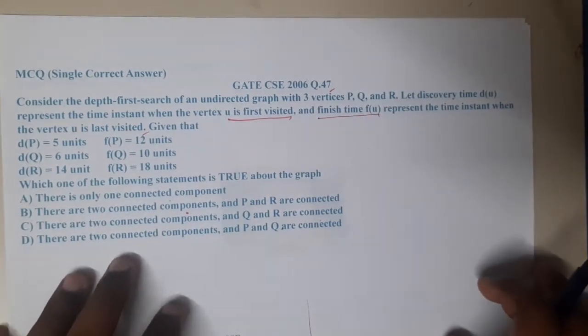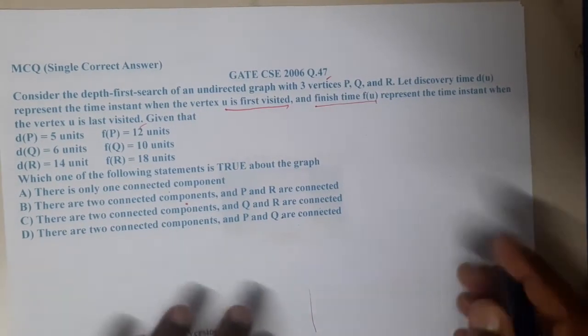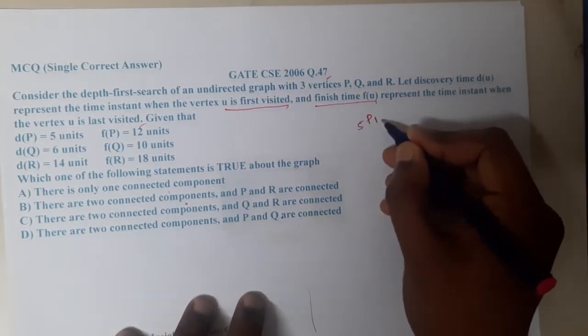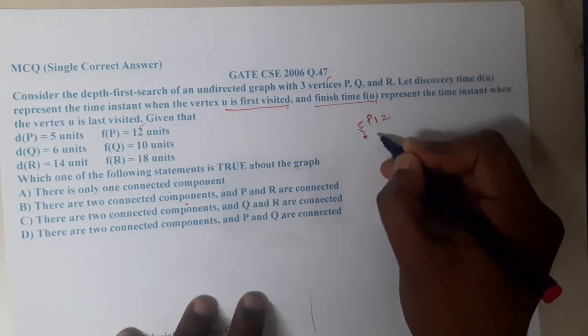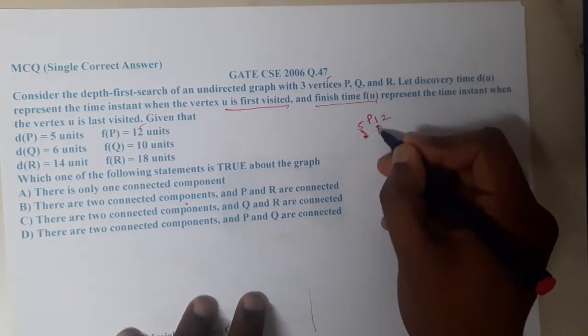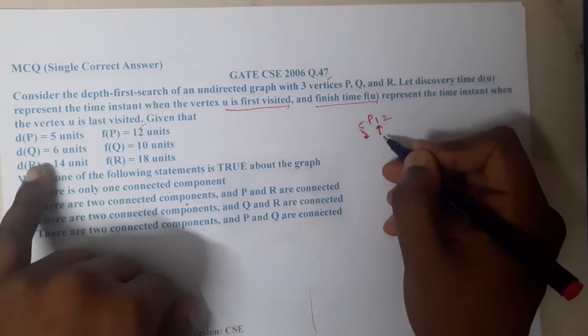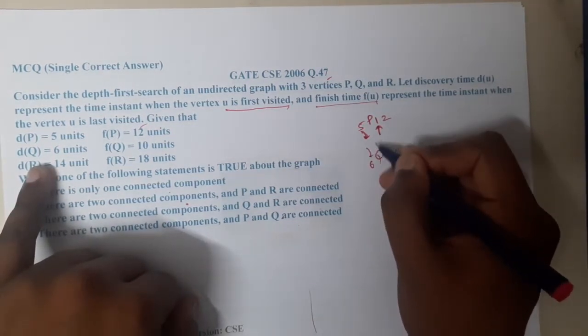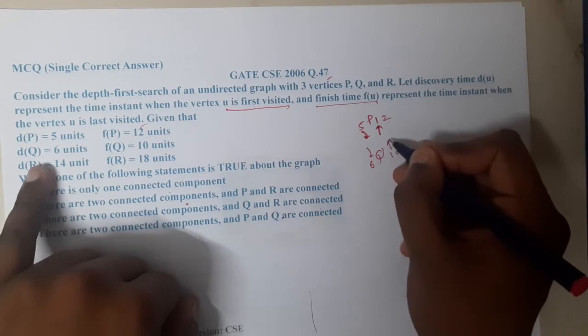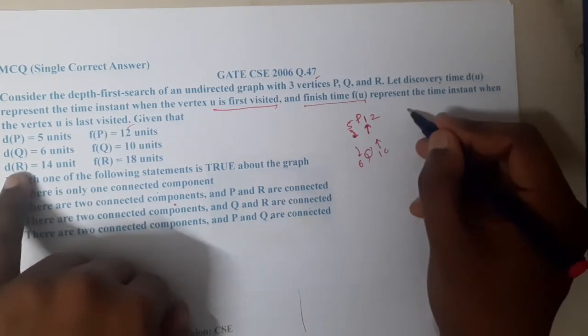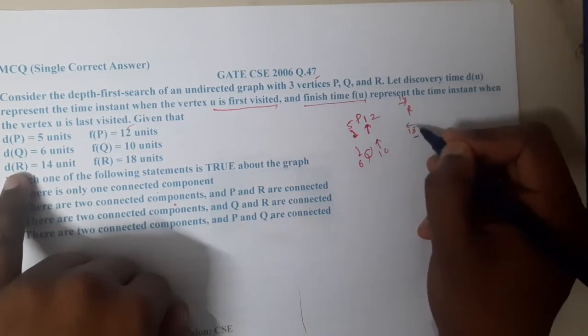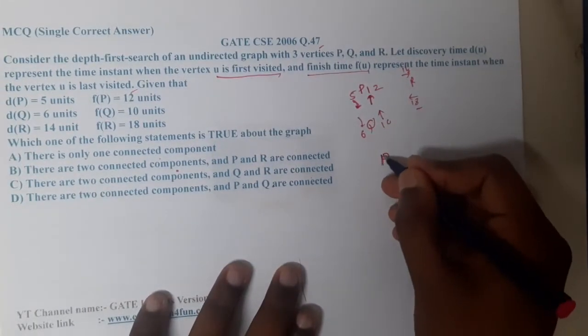Given that, we have three values. Which one of the following options is true? Let us understand the options. You visited P at 5 and 12, so you went at 5 and came back at 12. You visited Q at 6 and 10, so basically from P you went to Q and came back. If you take R, you went to R at 14 and came back at 18.